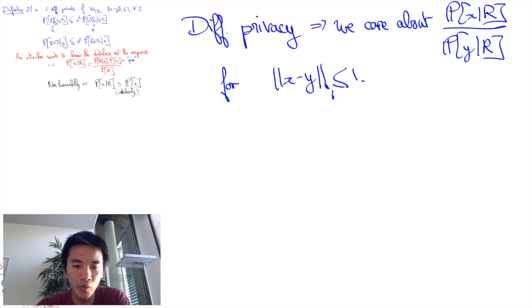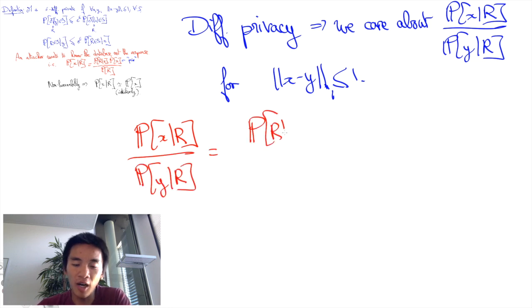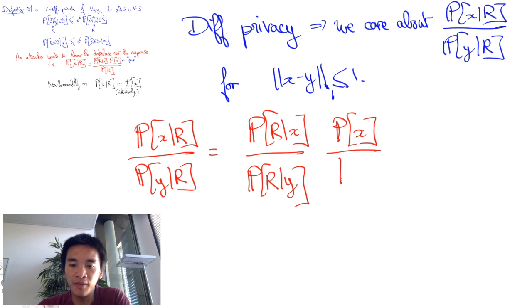Now, using Bayes' rule, this quantity can be related to the corresponding prior belief ratio. Indeed, probability of x given R divided by the probability of y given R is equal to the ratio of the probability of R given x by the probability of R given y times the ratio of the prior beliefs, that is, the probability of x divided by the probability of y.